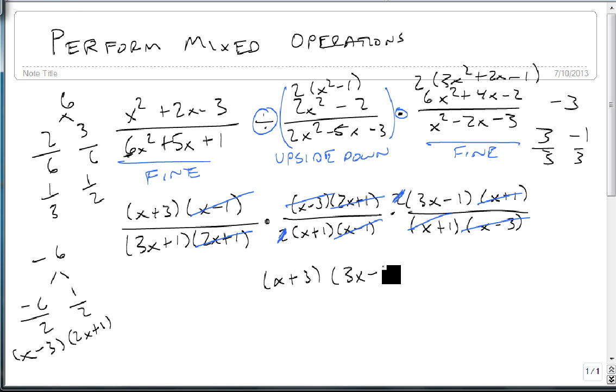As we do that, we get as our final answer (x + 3)(3x - 1) on top, and on bottom we get (3x + 1)(x + 1). Notice that the 3x + 1 and the 3x - 1 don't divide out because they are not exactly the same. So as long as you reverse the ones that you need to and factor everything, you can simplify these and multiply these just like any other multiplication or division problem.